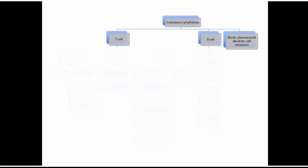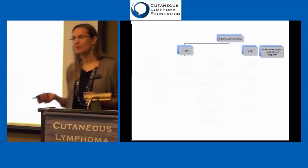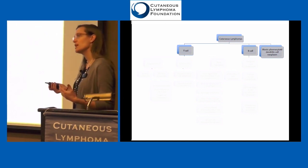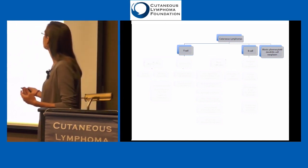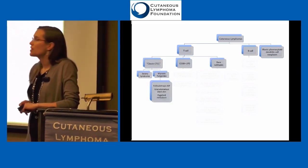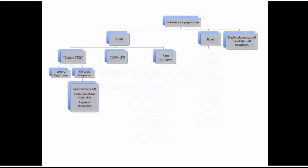This is the big schematic that I spend a lot of time on with residents and students when teaching, just to give the framework of what all the different subtypes of lymphomas in the skin are. We talked about these three main buckets. We're going to focus on what I call classic CTCL, since that's most of what we see. Classic CTCL has two groups: mycosis fungoides, the most common, and then its cousin, Sézary syndrome. Within mycosis fungoides, there are a few subtypes.